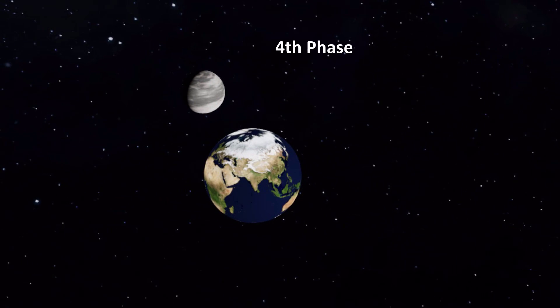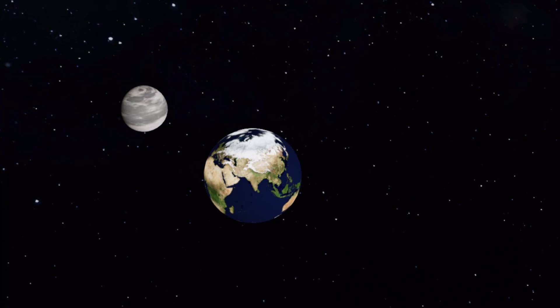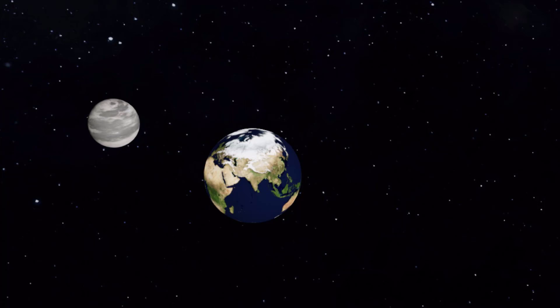The fourth phase of the moon is the waxing gibbous. This occurs when more than half of the moon's illuminated side is visible to us, but less than a full moon. The visible part of the moon will continue to increase in size until it reaches the full moon phase.